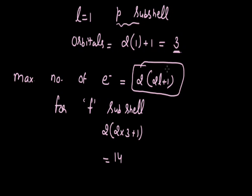So that is about the azimuthal quantum number. Next time we will be dealing with the remaining two quantum numbers — the magnetic quantum number and the spin quantum number.